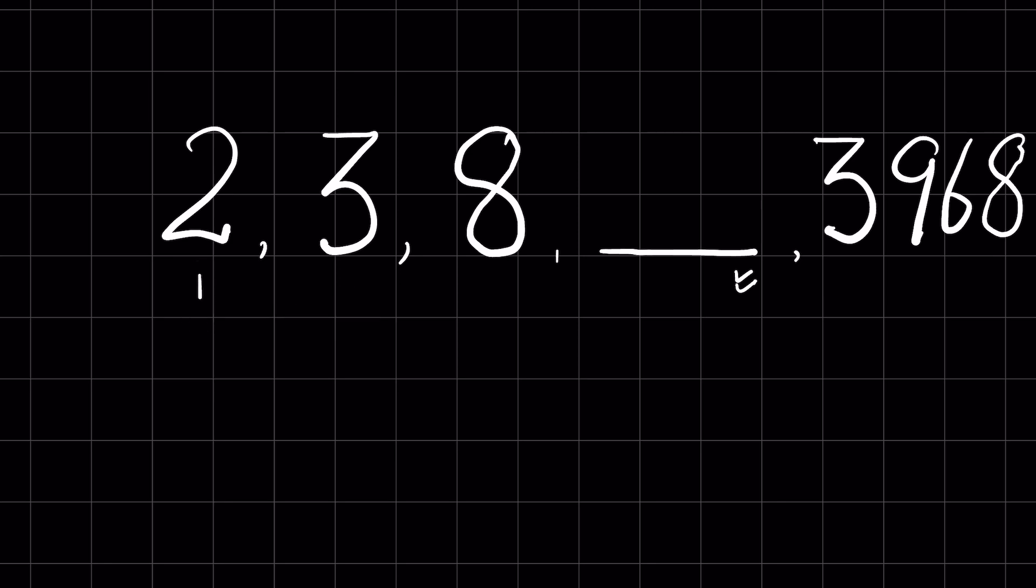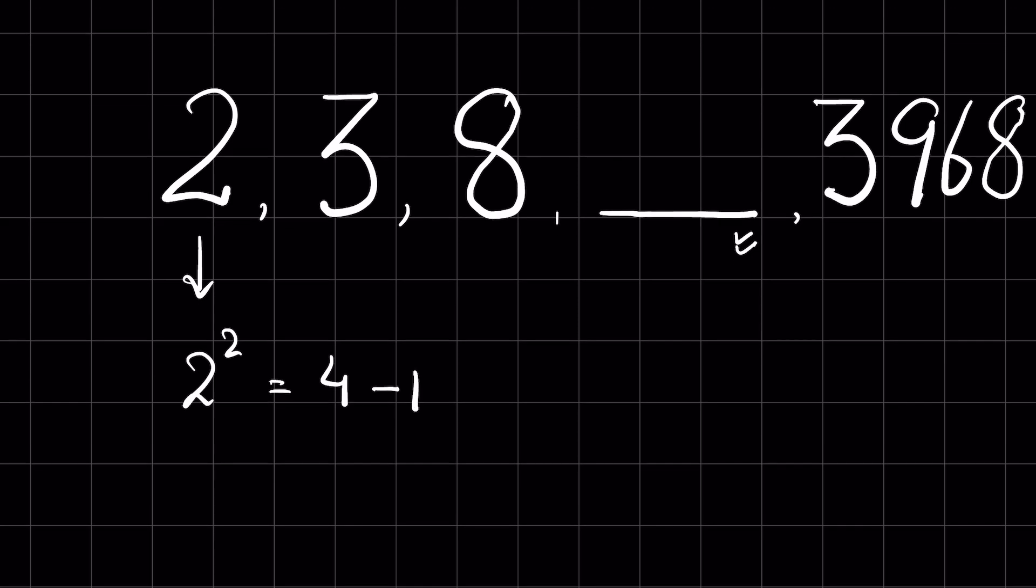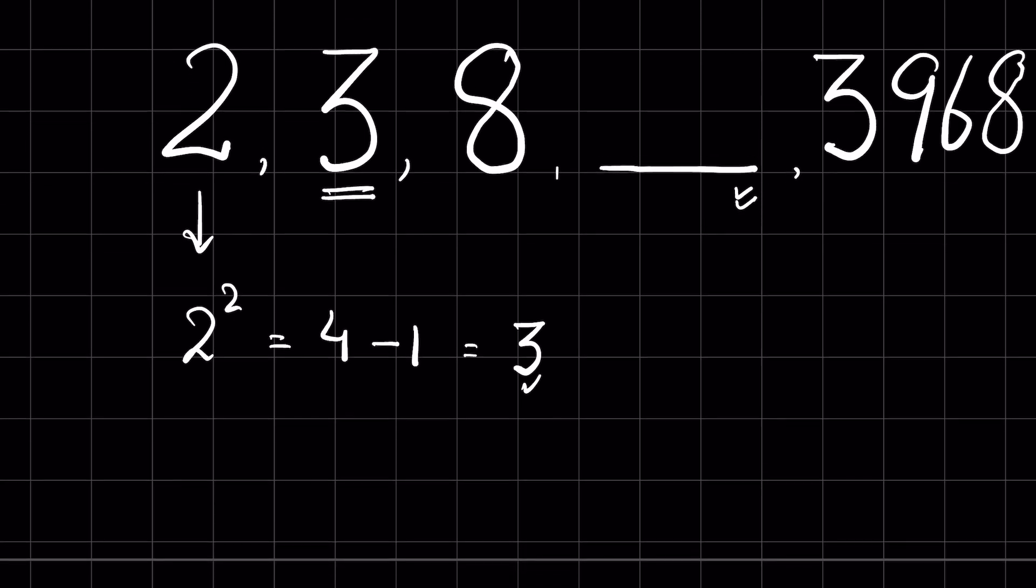If we square 2, then it equals 4, and when we subtract 1, it becomes 3. So this 3 returns here again. If you square 3, then that is 9. Again, 9 minus 1 is 8.